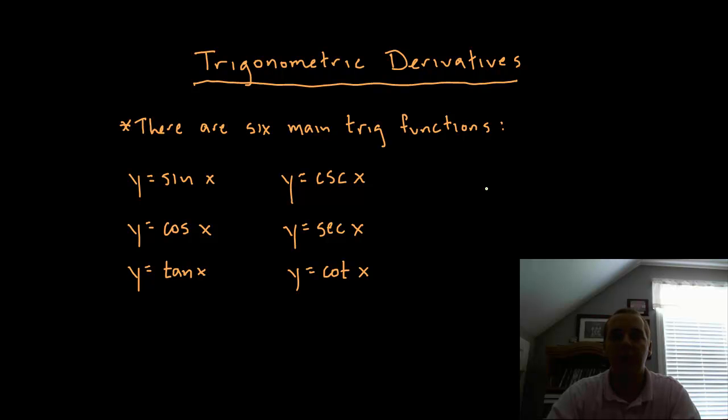There are 6 main trigonometric functions, and in this video we're going to take a look at how to take the derivatives of all 6. The 6 main trig functions are sine of x, cosine of x, tangent of x, cosecant of x, secant of x, and cotangent of x, and we're going to go through these one at a time.